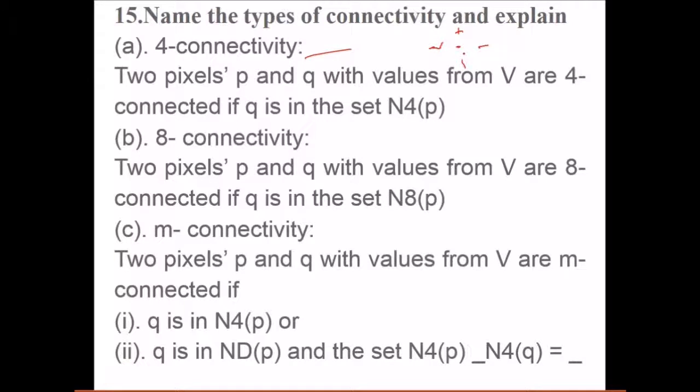8-connectivity means two pixels p and q with values from V are 8-connected if they are in the set of N8(p). m-connectivity means two pixels p and q with values from V are m-connected if q is in N4(p) or q is in ND(p), diagonal p. This is 4p, 1, 2, 3, 4, and diagonal p. If these two conditions are met, we say they are m-connected.